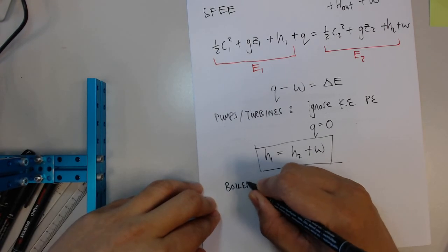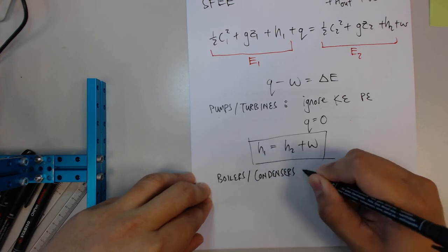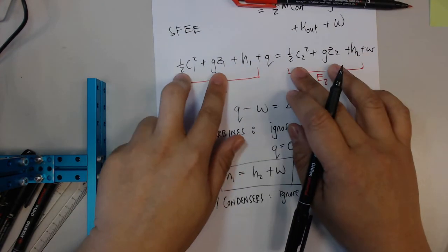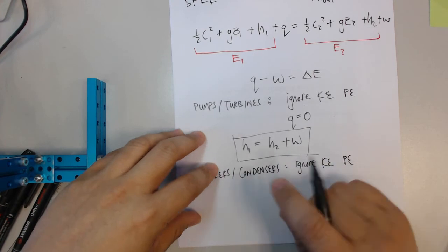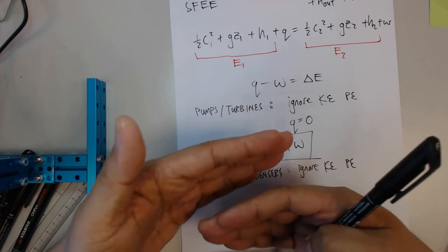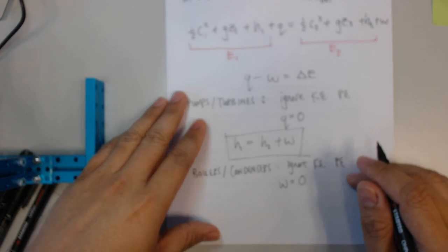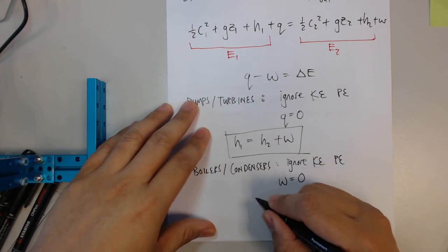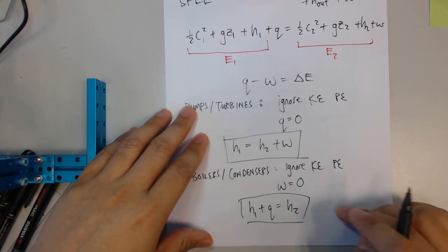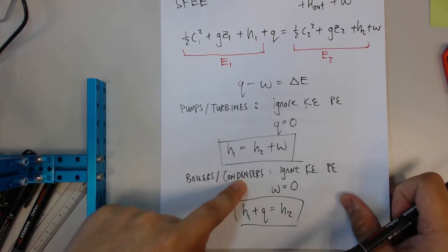For boilers and condensers, you can also ignore KE and PE. They are not as significant as compared to the other four terms. And boiler and condensers is just an exchange of heat between two fluids. So actually there are actually no moving parts. Because there are no moving parts, there is no work done. There is no work involved at all. So there's only Q. So at the end, you are only left with this equation. This will be simplified if your device is either a boiler or a condenser.